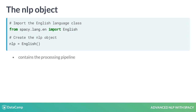It contains all the different components in the pipeline. It also includes language-specific rules used for tokenizing the text into words and punctuation. spaCy supports a variety of languages that are available in spaCy.lang.